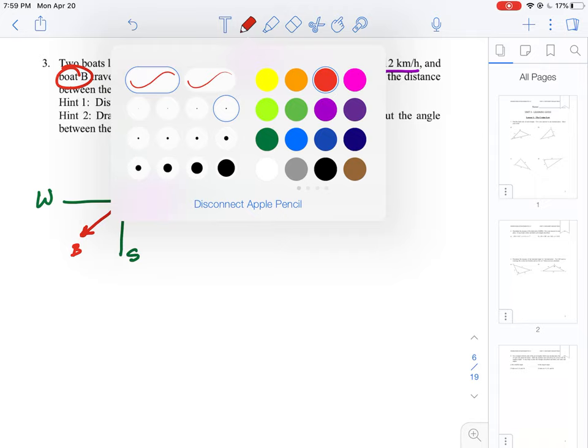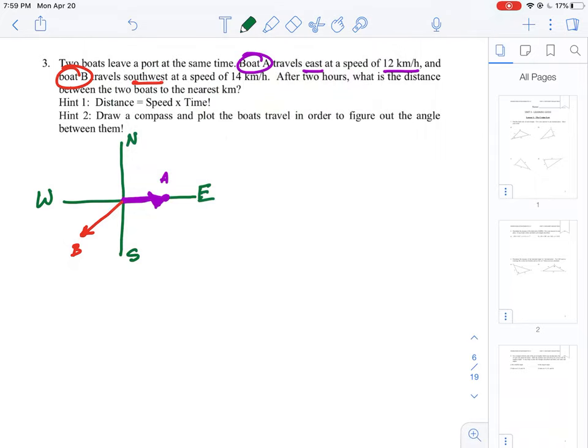What we're asked to find is actually the net result of how far those two boats are. We can connect the tips of both arrows together. I'm going to do it as a dashed line here in green, and that is what we're actually asked to find at this point. The diagram is set up where two boats are moving apart from each other.